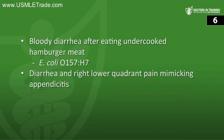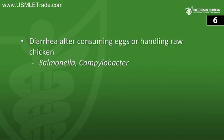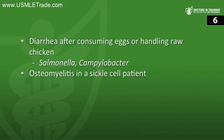Diarrhea and right lower quadrant pain mimicking appendicitis? Yersinia. Diarrhea from consuming eggs or handling raw chicken? Two organisms fit: Salmonella or Campylobacter — don't forget either one, they're both really important. Osteomyelitis in a sickle cell patient? You have to think of Salmonella. That is the end of our end-of-session quiz — see you next time.